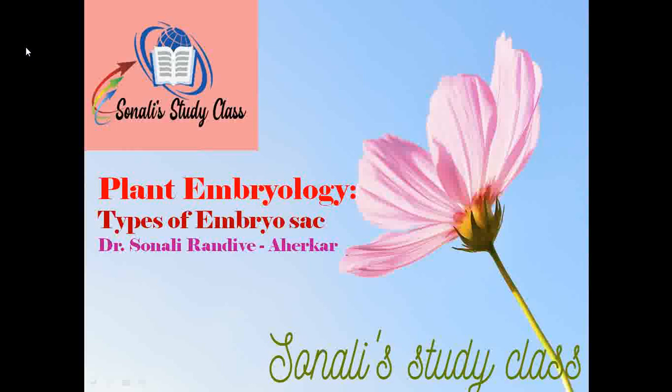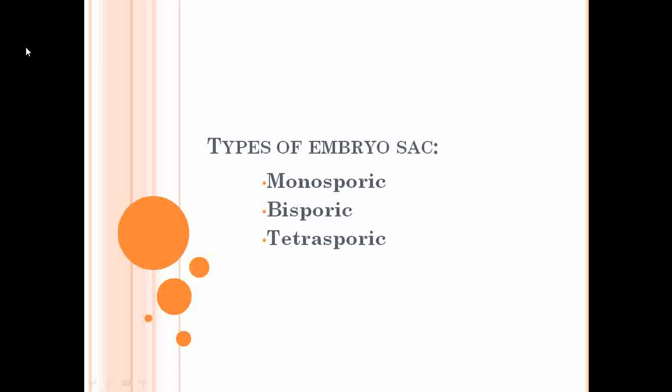Hello friends, welcome to my channel. Today we are going to discuss about the types of embryo sacs. If we observe the angiospermic plant families, the angiosperm shows presence of three different types of embryo sacs: monosporic embryo sac, bisporic embryo sac, and tetrasporic embryo sac.